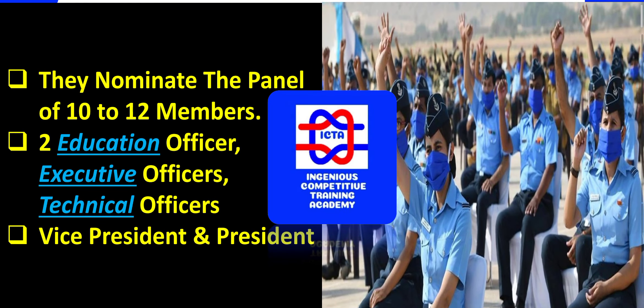Let us see what exactly we have. Initially we can see the nomination of the panel. In that panel there will be around 10 to 12 officers from the education department, executive, and technical departments — technical includes the IT cell as well as officers relevant to physics, chemistry, and mathematics. These officers are highly qualified and their academics are phenomenal. There will also be a vice president and a president who will be presiding over this examination board — their knowledge of the subject is exemplary.